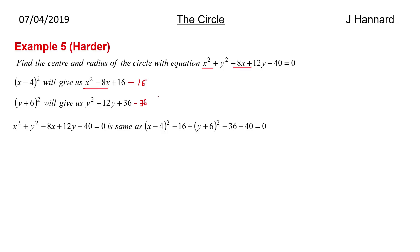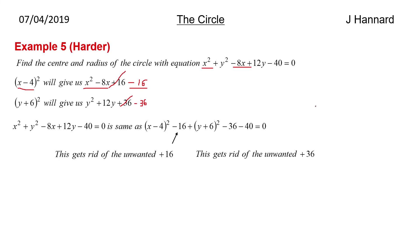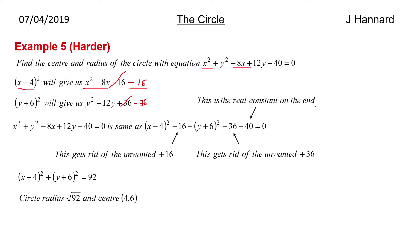So the original equation X squared plus Y squared minus 8X plus 12Y minus 40 is the same as (X minus 4) squared minus 16, plus (Y plus 6) squared minus 36, minus 40. That gets rid of the unwanted plus 16, that gets rid of the unwanted 36, and minus 40 carries on from before. Tidying it all up, we get (X minus 4) squared plus (Y plus 6) squared equals 92. That gives a radius of root 92 — check if it simplifies on a calculator — and a centre of (4, minus 6).